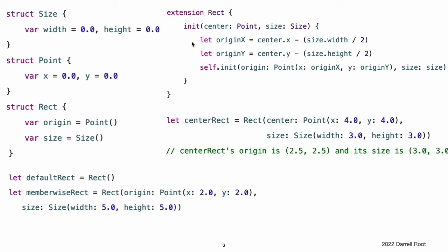You can extend the rect structure to provide an additional initializer that takes a specific center point and size. This new initializer starts by calculating an appropriate origin point based on the provided center point and size value. The initializer then calls the structure's automatic member-wise initializer init origin size, which stores the new origin and size values in the appropriate properties.